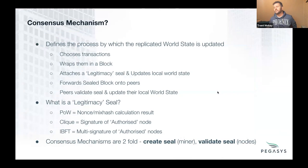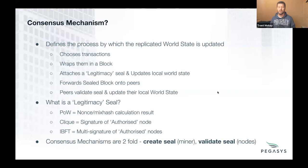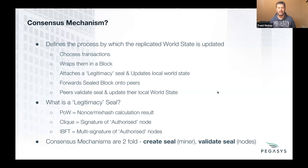Why do we need consensus mechanisms? In some respects the real question is: why do we need blocks? Those blocks are critical so that in a distributed world, everyone has a clear understanding of what the true world state is at any given moment. The consensus mechanism is the manner in which we create that block. At its highest level of abstraction, it needs to choose transactions from the transaction pool, clump them into a block, attach a legitimacy seal, use that sealed block to update its local world state, then forward it to peers.